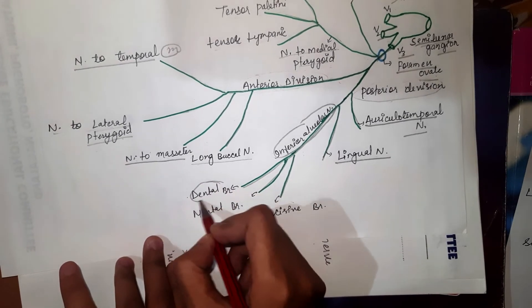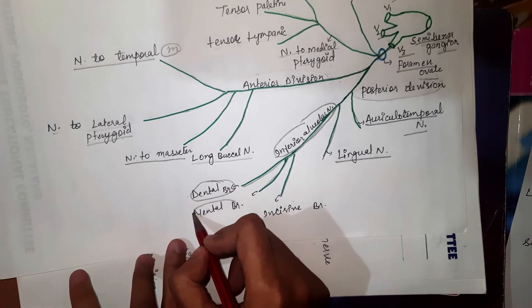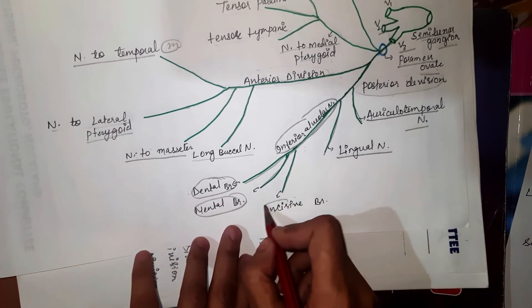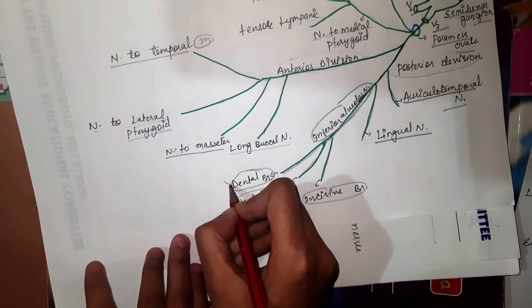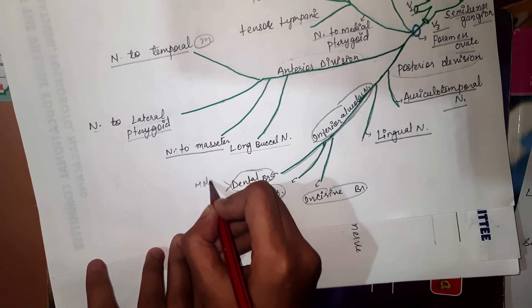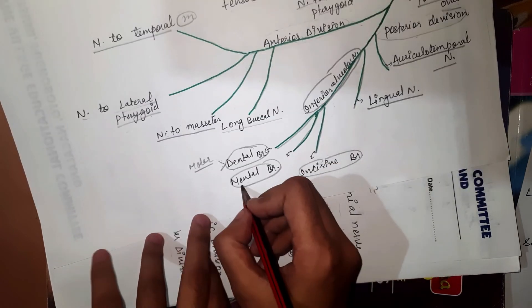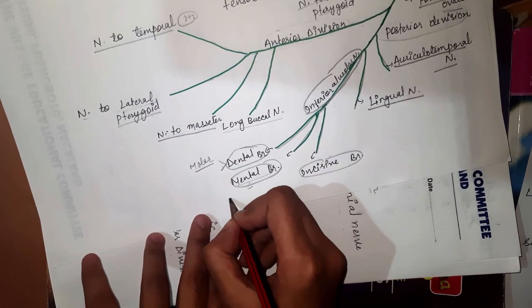The first branch is called dental branch, the second one is called mental branch, and the incisive branch. Dental branch actually supplies the molars, and the mental branch supplies the chin.